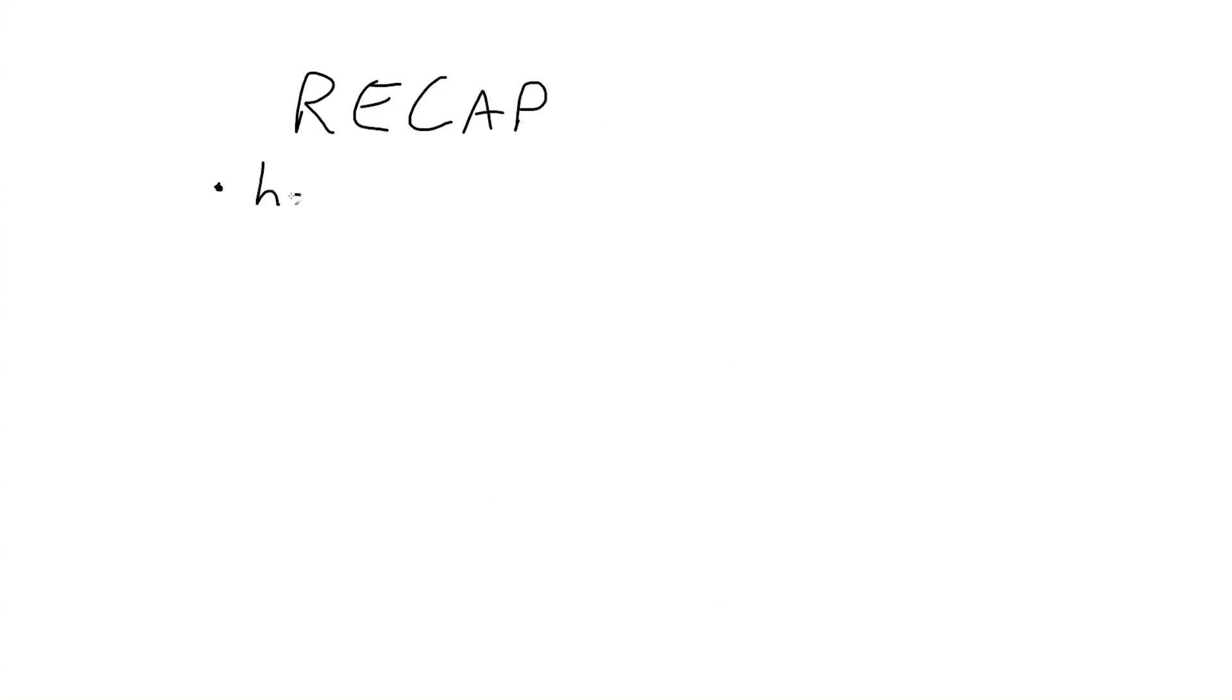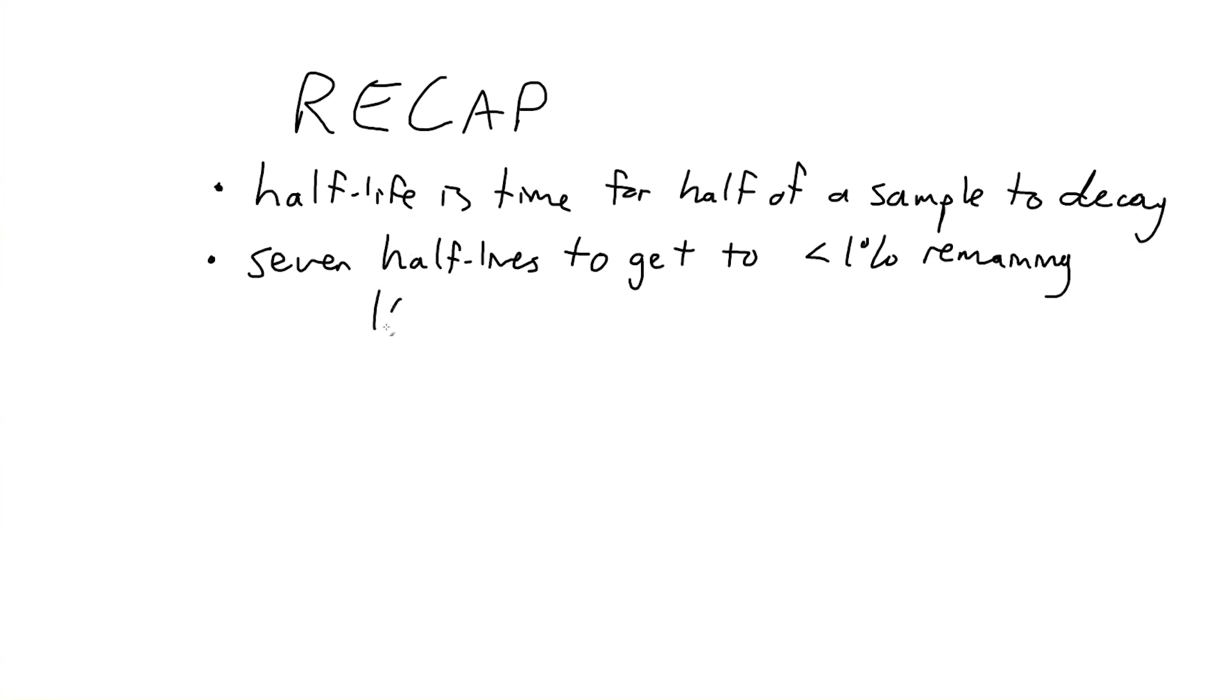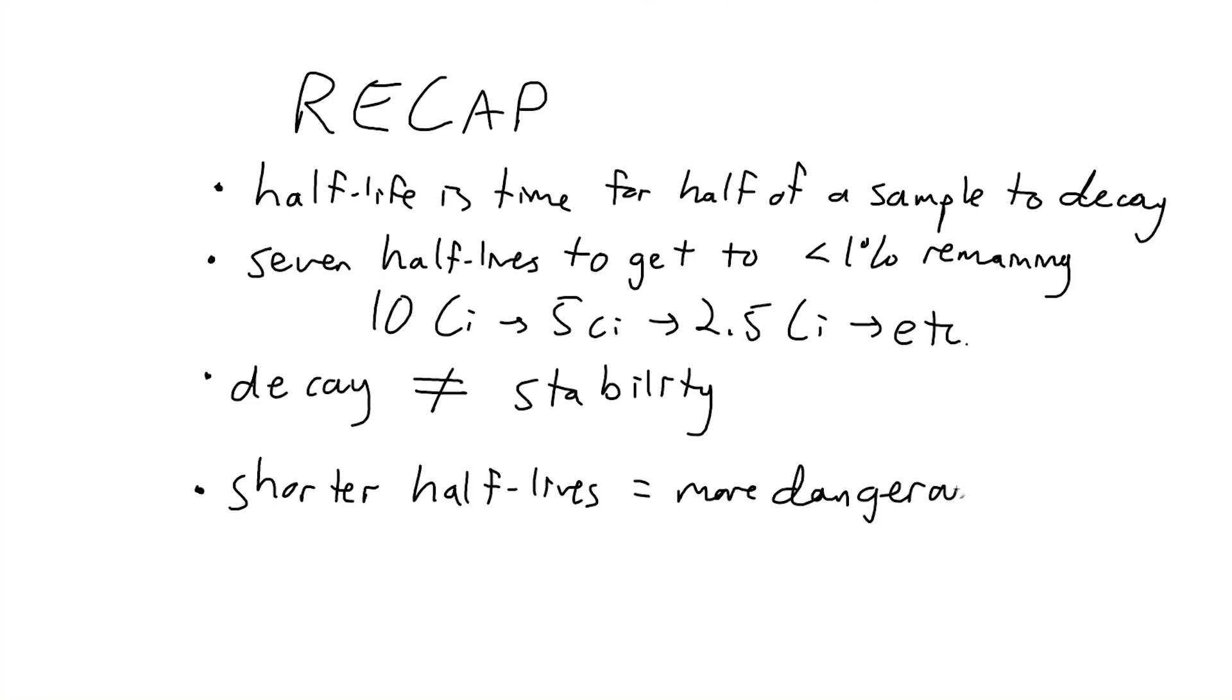All right, let's do a little recap here. So half-life is the time it takes for half of a radioactive sample to decay away. This means that it takes seven half-lives to get to less than 1% of the initial material left over after radioactive decays because half-life, quote-unquote, resets after each half-life. So you go from 10 Curies to 5 Curies to 2.5 Curies, et cetera. Also, decay does not necessarily equal stability. One radioactive material may have just decayed into another one. And finally, half-life is really important for telling us which radionuclides are more dangerous because a shorter half-life directly corresponds to the fact that a radioactive material is emitting more energy per second, so emitting more radiation per second. All else equal.